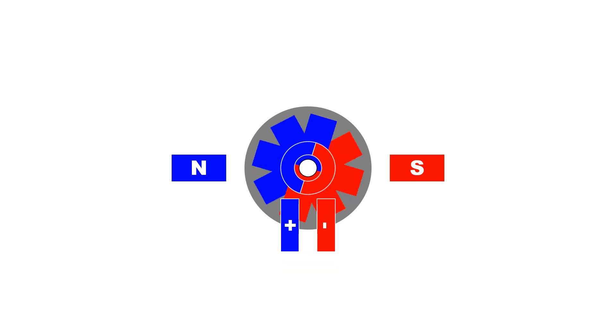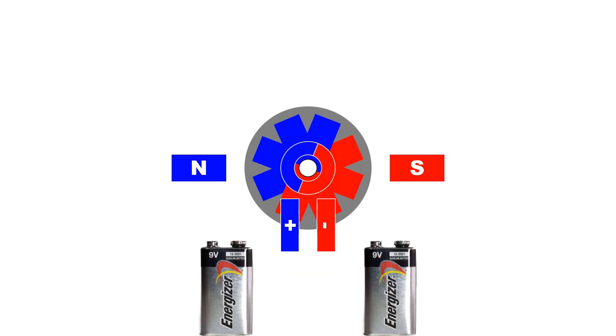By connecting two batteries of the same kind, you double the motor power. Depending on how you connect them, one of the power elements is increased, current or voltage.